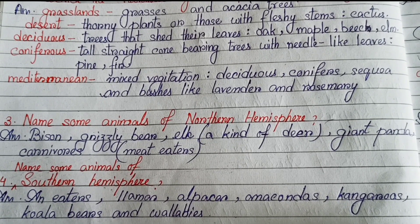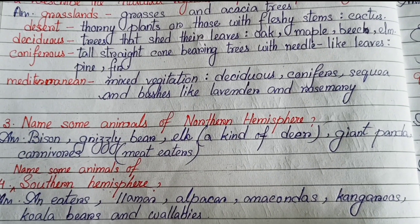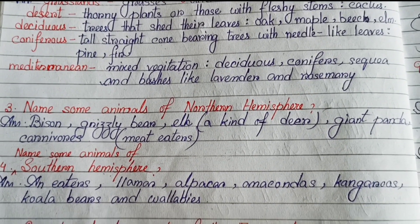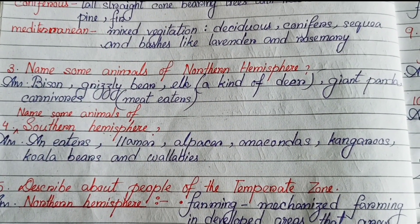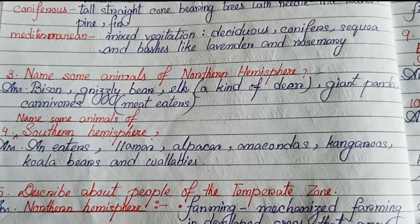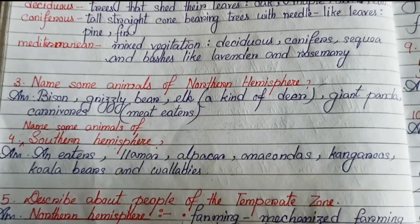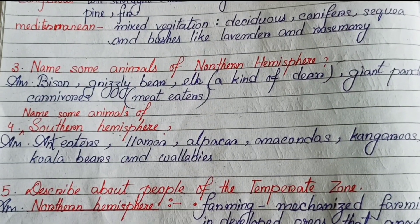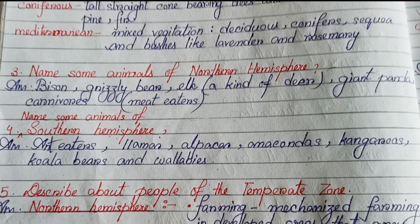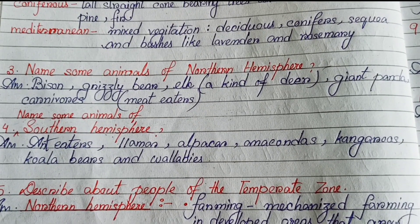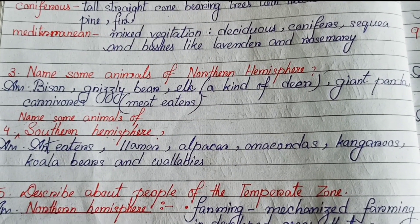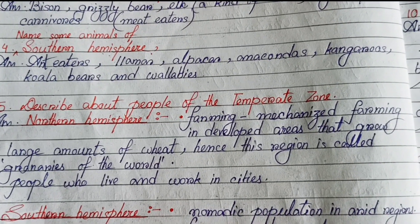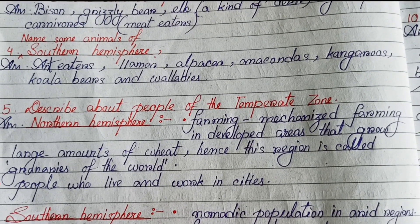Number three: name some animals of the northern hemisphere. Bison, grizzly bear, elk (a kind of deer), giant panda, and carnivores. Number four: name some animals of the southern hemisphere. Anteaters, llamas, alpacas, anacondas, kangaroos, koala bears, and wallabies.